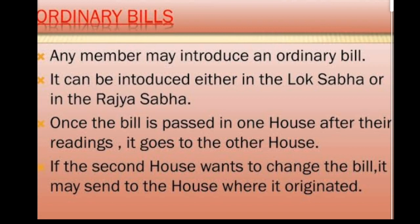In the third and final reading, the bill is moved for final approval. The bill as a whole is finally discussed and put to vote. If the majority of MPs are in its favor, the bill is passed. For example, if 500 members are present and 251 — more than 50 percent — are in favor, the bill is passed by a simple majority. If passed in one house, it is sent to the other house, where it goes through the same procedure.